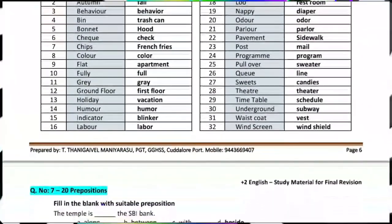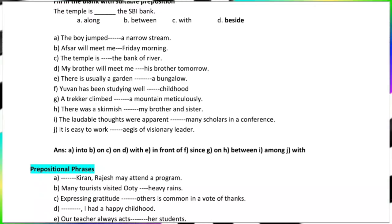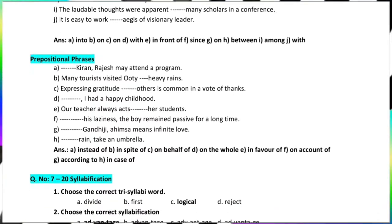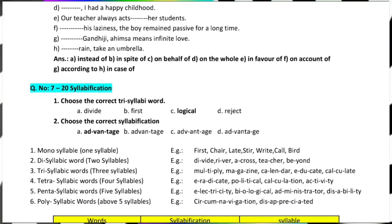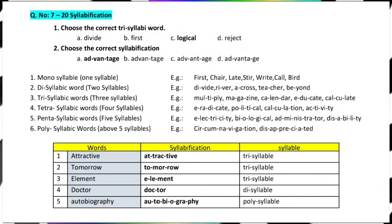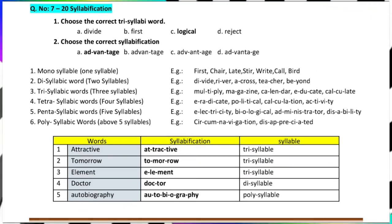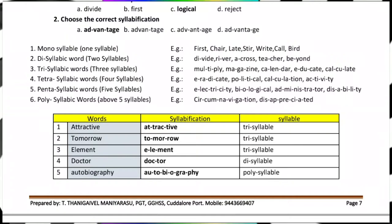From the question bank, learn prepositional phrases. Then syllabification — here is a simple trick. For example, 'multiply' — you count syllables. 'Calculate' has three syllables, so it is called a tri-syllable. Two syllables is a di-syllable, and more syllables is poly-syllable.